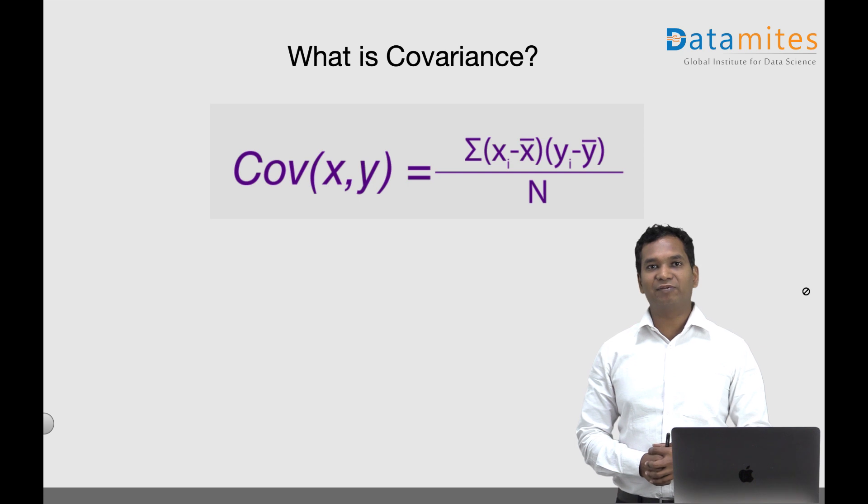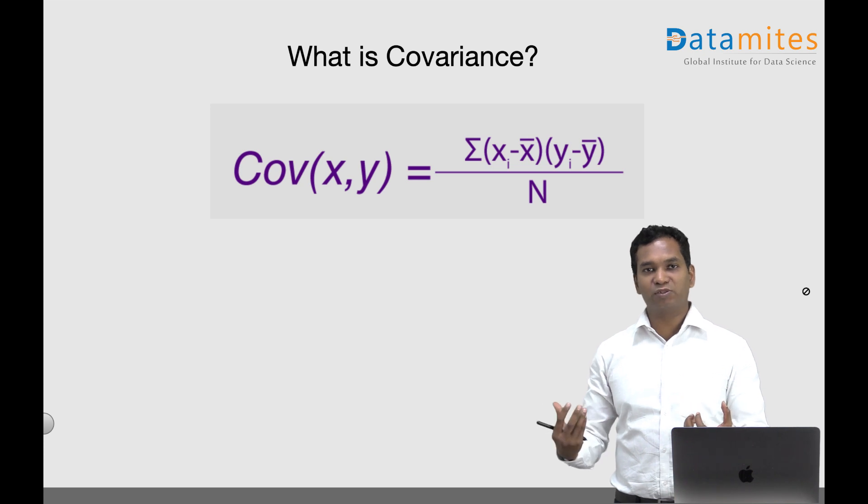For example, if both the variables have higher values - if the value of x is higher, the y value is also at the higher levels, and vice versa. If it is lower and the y is also at lower levels, we say covariance is positive.